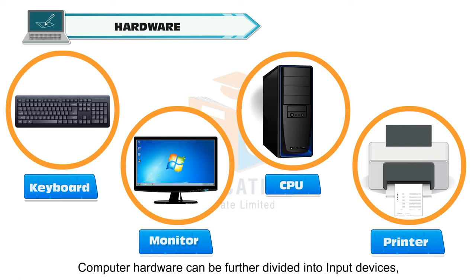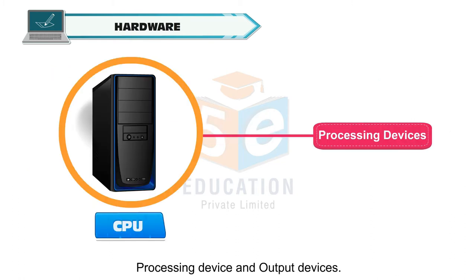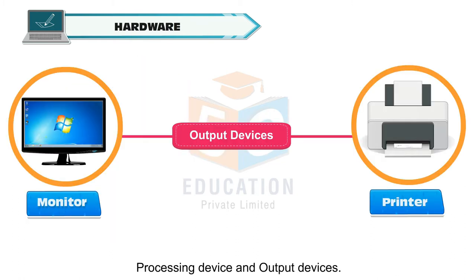Computer hardware can be further divided into input devices, processing device and output devices.